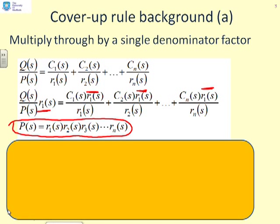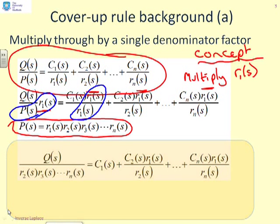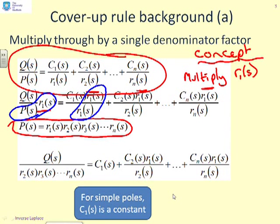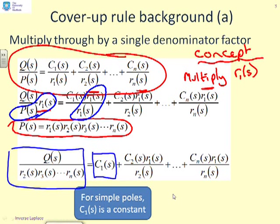Why is that important? Because if I look at this particular term — R1 over P — you can see there's going to be a cancelling R1 factor. Looking at this term, you can see the R1's cancel. However, they don't cancel anywhere else. So multiplying through by R1, the R1 has disappeared from the left term and from this term here, but it still occurs in all the remaining terms.